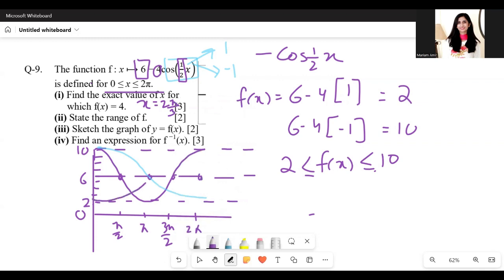So we get something like this. Let me clear everything else. This is gone, this is gone. So we're going to draw the graph of 6 minus 4 cos half x.